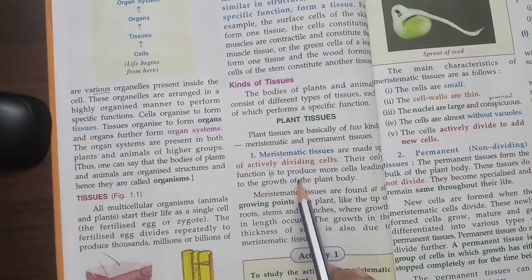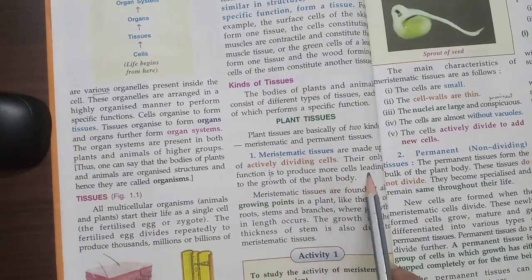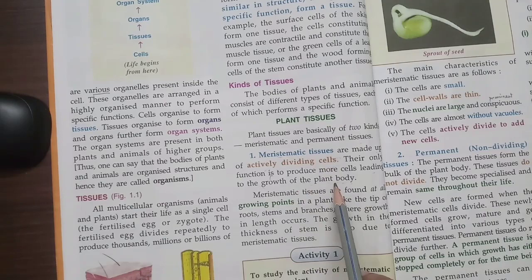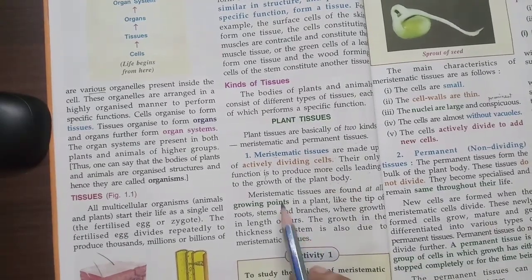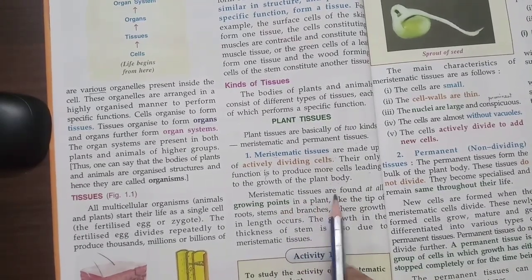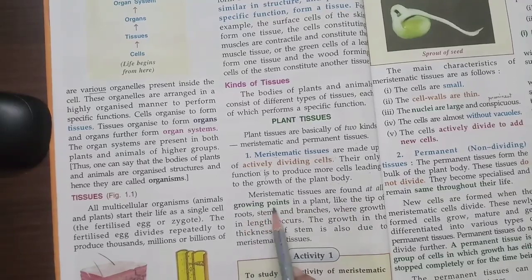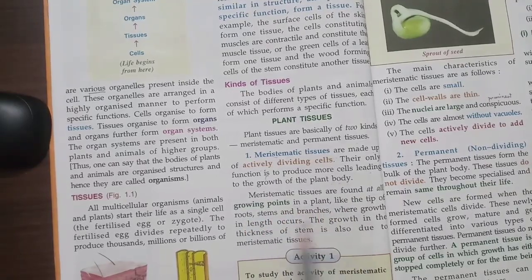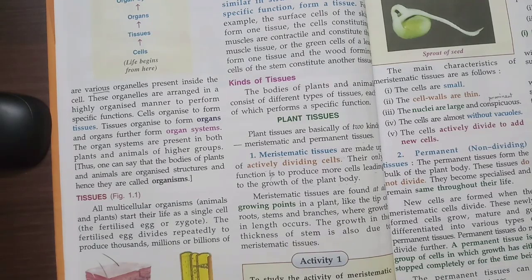Their only function is to produce more cells leading to the growth of the plant body. Meristematic tissues are found at all growing points in the plants.